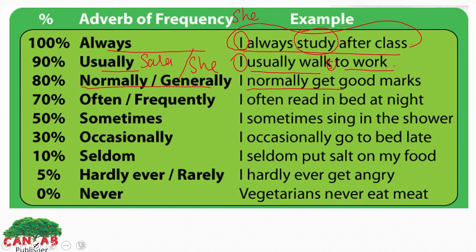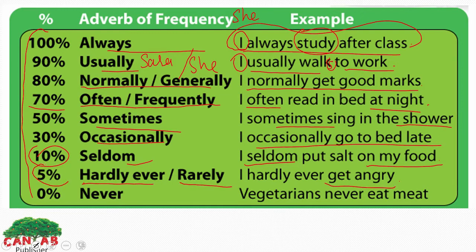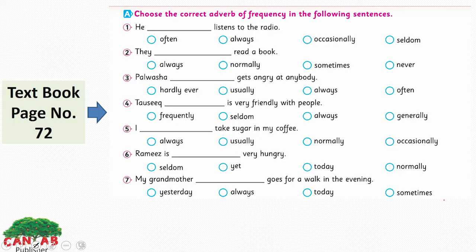Normally/Generally: 'I normally get good marks.' Often/Frequently: 'I often read in bed at night' / 'I frequently read in bed at night.' Sometimes: 'I sometimes sing in the shower.' Occasionally: 'I occasionally go to bed late.' Seldom: 'I seldom put salt on my food' — 10% chances, بہت کم نمک ڈالتا ہے۔ Hardly ever/Rarely: 'I hardly ever get angry' — 5% chances۔ Never: 'Vegetarians never eat meat' — 0% chances۔